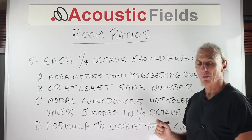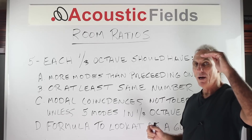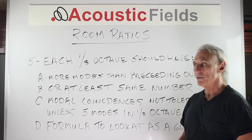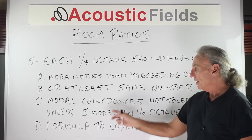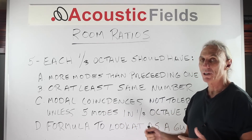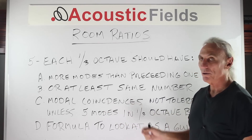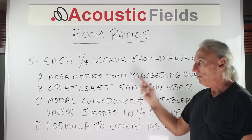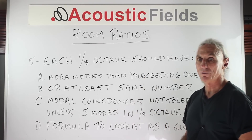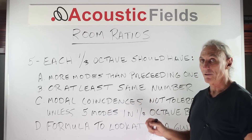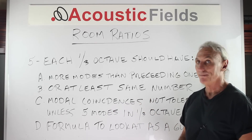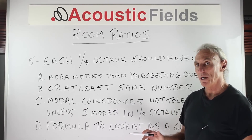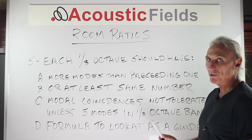Modal coincidences are not tolerated. What's a modal coincidence? When you have a dimension — a height, width, or length — that's the same as another. When you send your room dimensions to me, I see a lot of dimensions that are the same. This is called a coincidence, and when I respond to you about that, you should know that's not even a criteria that Bonella considered for determining room ratios. So if you have a room with two dimensions that are the same, it's not even in the mix — it's very, very serious to have two dimensions the same.